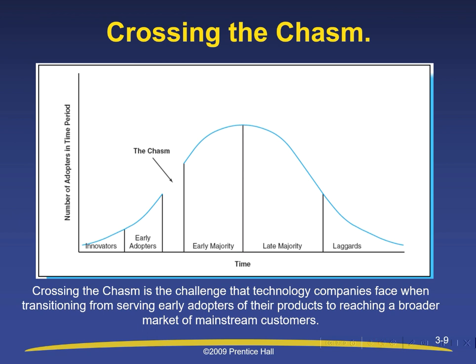Looking at the diagram, the Y-axis shows the number of adopters in a time period and the X-axis shows time. The innovators start at the lowest time period and move to early adopters. But before they can reach the early majority, they have to cross the chasm — the empty gap shown by the arrow. Every company has to cross this gap to move higher in their business. Moving from innovators to early adopters there is no gap, but moving from early adopters to the early majority requires crossing this gap. Many companies have crossed it successfully, moving up through late majority and finally arriving at the laggards.